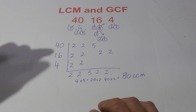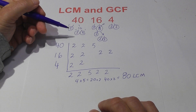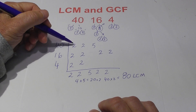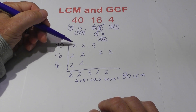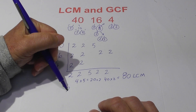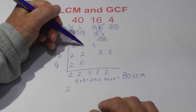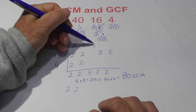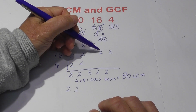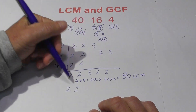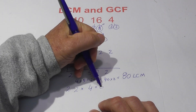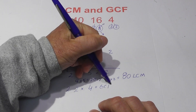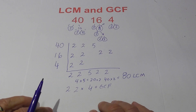Now let's look at the GCF. Remember the rule: you have to have all 3 numbers represented in the column. So there is one, I will bring one 2 down, bring another 2 down. I cannot bring this 5 down, can't bring this 2 down, can't bring this. And 2 times 2 is 4 — that equals the GCF. So that's 3 numbers.